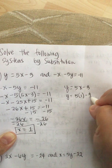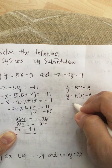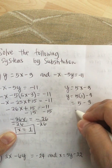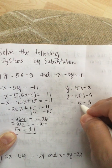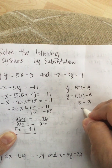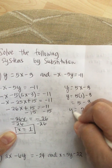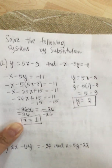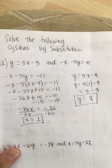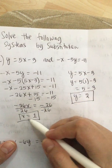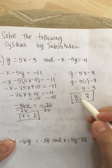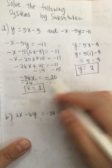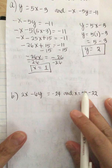So y equals 5 times 1 minus 3, which equals 5 minus 3, which equals 2. So y is equal to 2. Our two answers are x equals 1 and y equals 2.